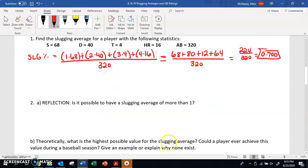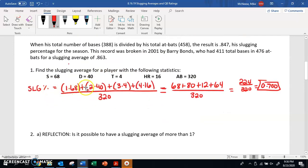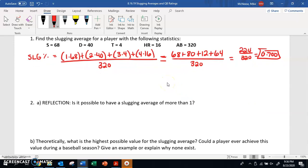Now it says, reflection: Is it possible to have a slugging average of more than 1? Take a second to think about this, pause your video and think, can you have a slugging average where it's greater than 1? Well, it is actually possible, but you're going to have to hit a lot of home runs, because home runs are the most valuable. They're worth 4 times whatever home runs you get, meanwhile singles are only 1 times.